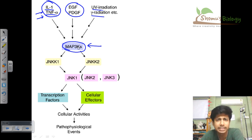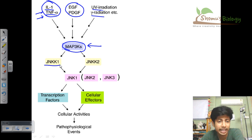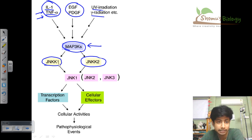Once MAP kinase kinase kinase is activated, it activates JNKK1 or JNKK2 — these are also kinases, so there are two kinases operating at this level.